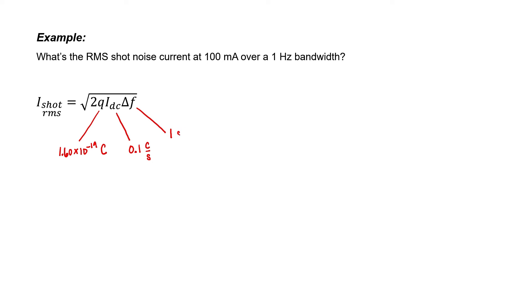Amperes is Coulombs per second, so let's change this unit to Coulombs per second. Likewise, Hertz is just inverse seconds. The units under the square root sign are Coulombs squared per second squared, so when you take the square root, you just get Coulombs per second, or amperes. Plugging in all of these numbers, we come up with 179 picoamps.